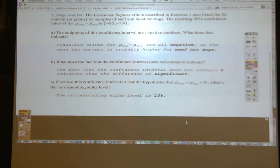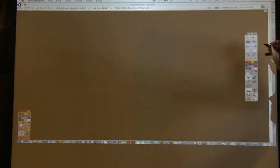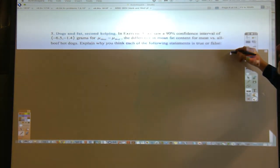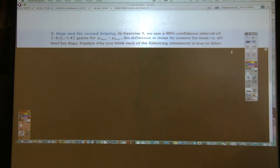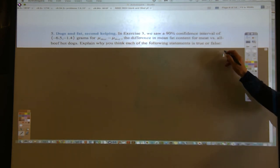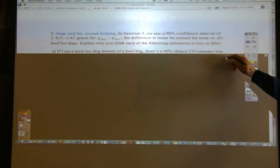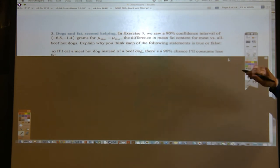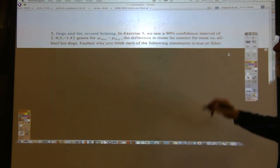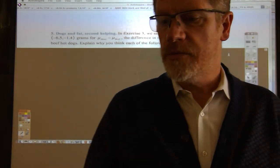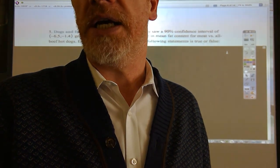We're reducing our confidence from 95 down to 90, which means the interval is shrinking down. Both teeth are negative, so zero is no longer included. The end points of this confidence interval are negative numbers. It means that the mean fat content is probably higher for beef than hot dogs, but we're only 90% confident. I'm going to pause the camera while you try to knock out true or false statements on your own.